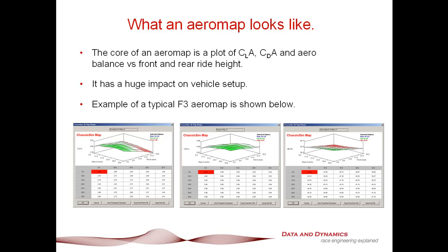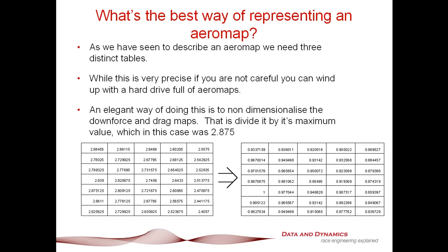The aero map has a massive impact on vehicle performance. As you can see to your left-hand side, there's the downforce map, the drag map, and lastly the aero balance map expressed as a percentage of front downforce. If we were going to be really specific about this, we would have three of these maps per every wing setting that you had — that would be the absolute 100% correct way of doing it. There's just one small problem: if you're not careful, you're going to wind up with a hard drive full of aero maps.